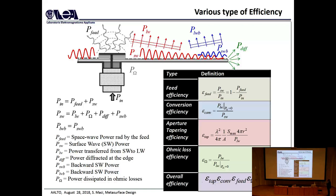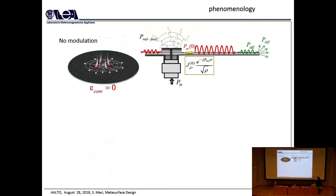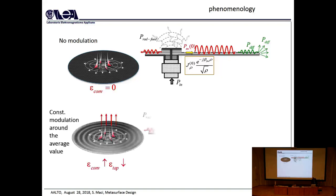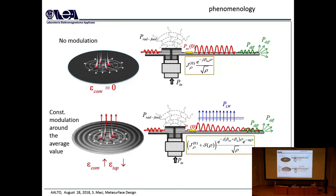There is also an ohmic loss efficiency, giving an overall efficiency as the product of four terms. The most important are the conversion efficiency and the aperture tapering efficiency. These play the same roles as spillover and taper efficiency in a reflector antenna. The trade-off between tapering efficiency and conversion efficiency is fundamental: with no modulation, the surface wave diffracts everything and conversion efficiency is zero; with modulation, an exponential attenuation is introduced. You must find an optimal balance between these two quantities to maximize aperture efficiency.